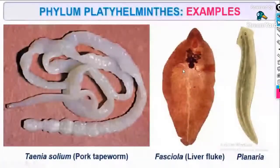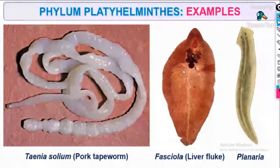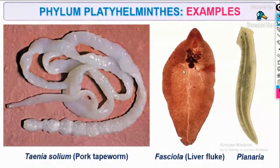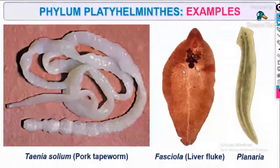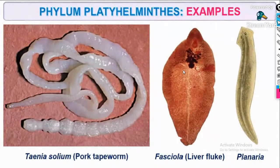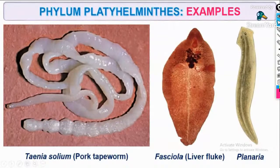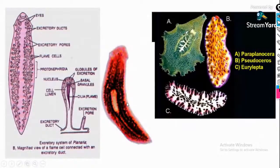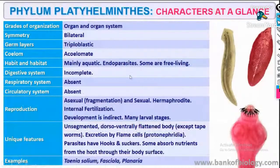Examples of Platyhelminthes: Taenia solium — that is the pork tapeworm; Fasciola — that is the liver fluke, also known as the sheep liver fluke; and Planaria. These are the characters at a glance.